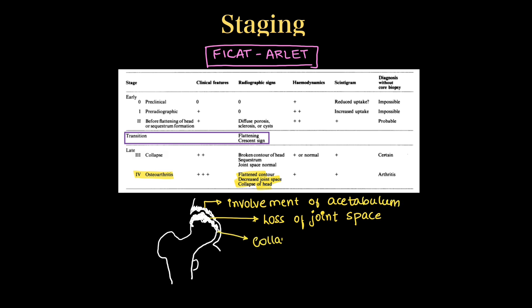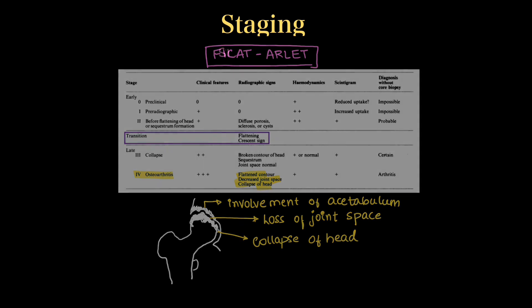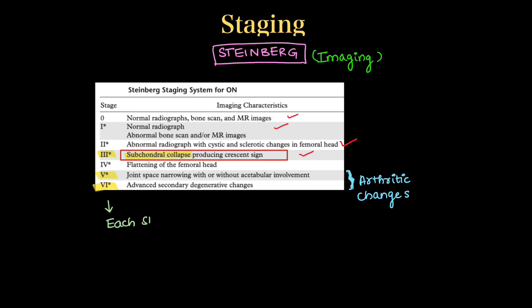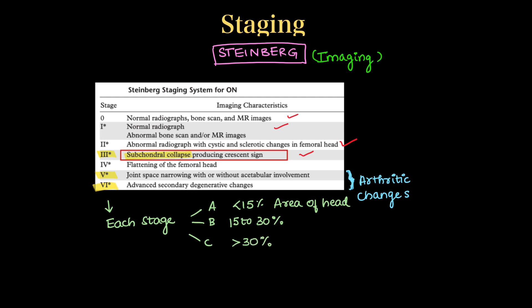That was Ficat-Arlet staging involving clinical, radiographic, and hemodynamic features. Steinberg staging mainly uses imaging and is similar to Ficat-Arlet, but Stage 3 includes subchondral collapse, and Stages 5 and 6 include arthritic and late changes. In Steinberg, each stage is subdivided into A, B, and C depending on the area involved: less than 15%, 15 to 30%, and more than 30% of the femoral head.